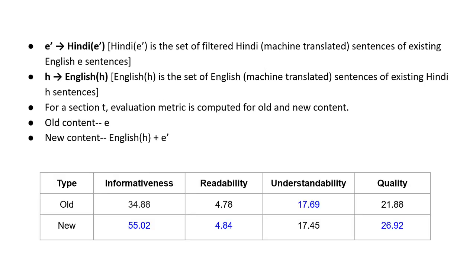Because of the lack of NLP resources for measuring these metrics in a low resource language — in our case Hindi — directly, we translated back the Hindi content to English using the same model IndicTrans and computed the metrics. Basically, we computed all the metrics for the old content E and then the new content, which is the back-translated H plus E. This table reports the average value of the three metrics: informativeness, readability, understandability, and quality. It is clearly visible that informativeness has increased and hence overall quality has increased. Although readability and understandability remain the same, which indicates that the newly added content is as readable and understandable as it was before.